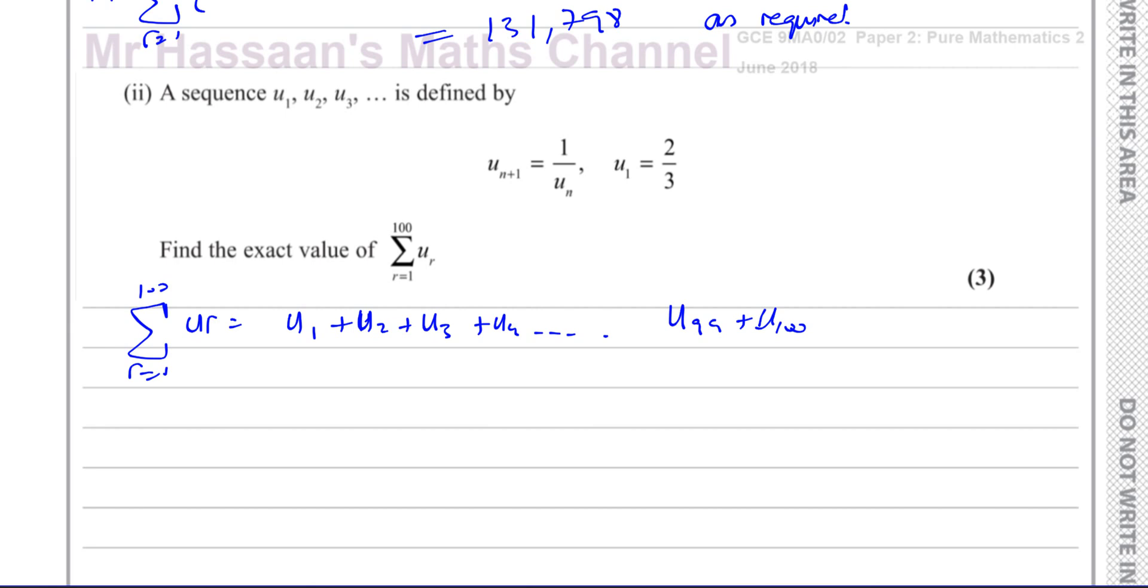Now this sequence is generated by this recurrence relationship. So this tells you how to get to the next term from a particular term. We know the first term is two thirds. Now the second term is going to be the reciprocal of the first term. As you can see, 1 over U1. So it's 1 over two thirds, which is basically 3 over 2. So U2 is 3 over 2. And you can see that it's going to just keep on going, repeating because the third term, U3 is 1 over U2. So it's the reciprocal of this. So you're going to keep getting terms.